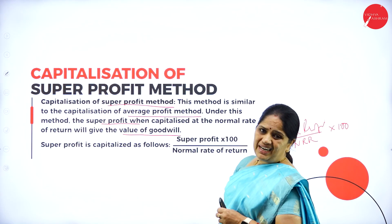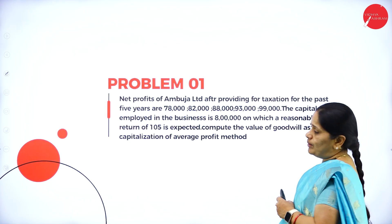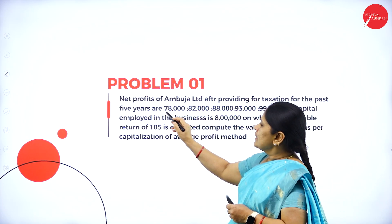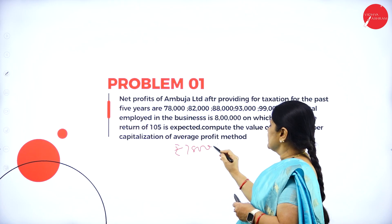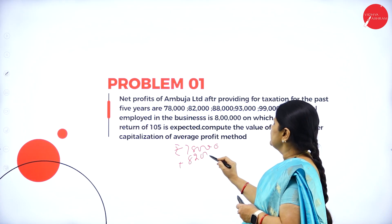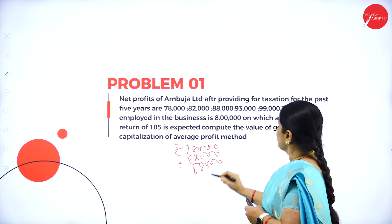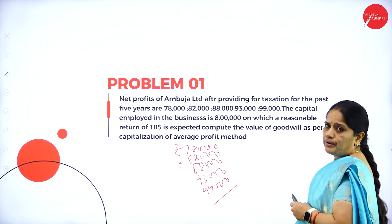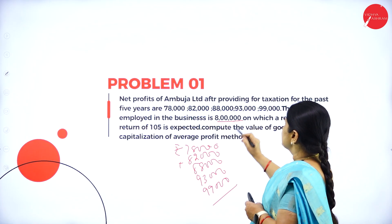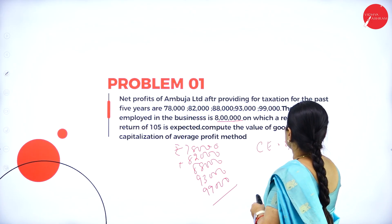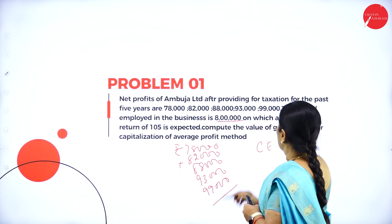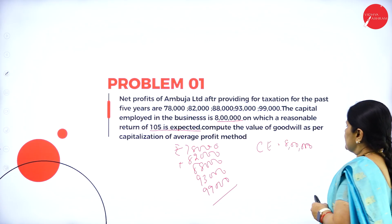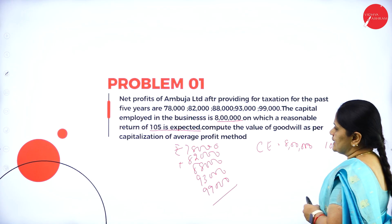We have a problem here. The net profits of Ambuja Limited after providing for taxation for the past 5 years are Rs. 78,000, 82,000, 88,000, 93,000, and 99,000. The capital employed in the business is 8 lakhs, on which a reasonable return of 10% — that is, NRR of 10% — is expected.